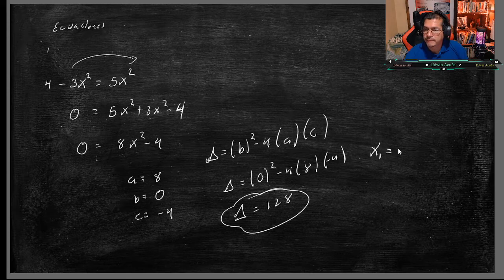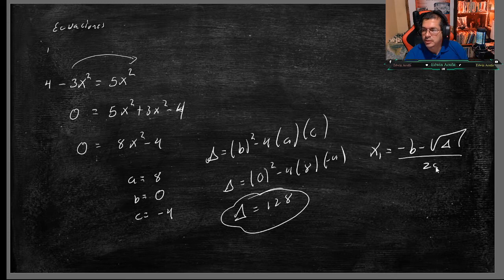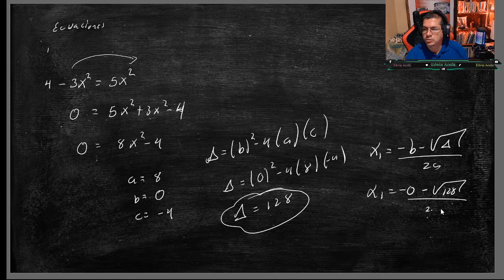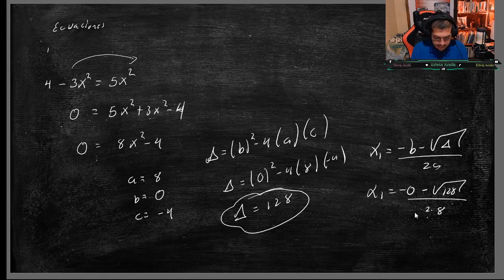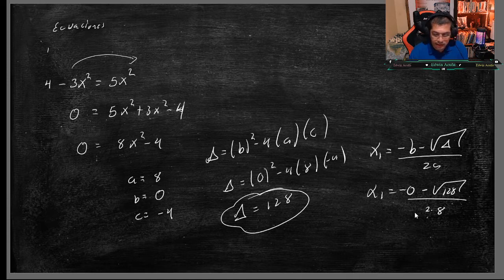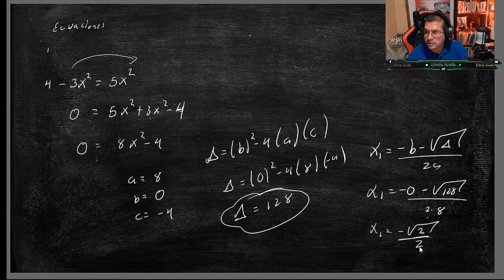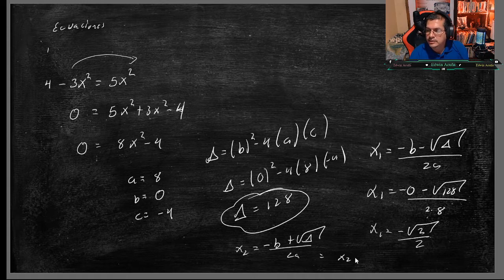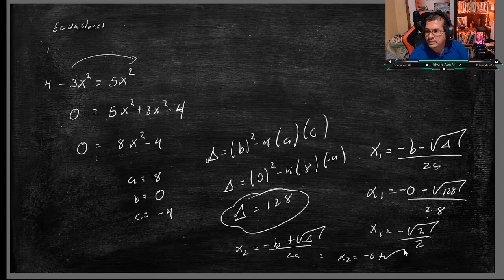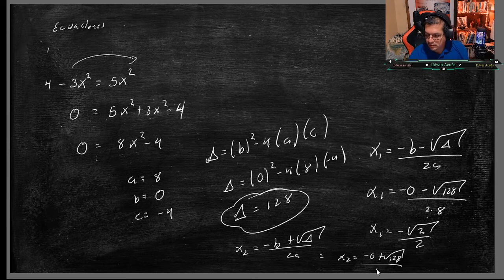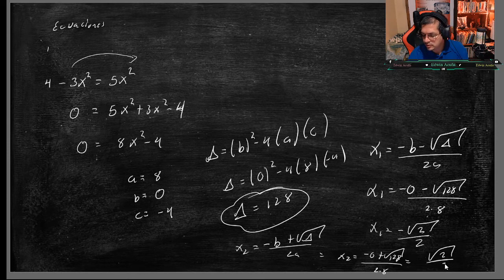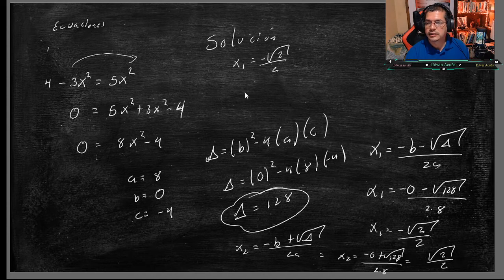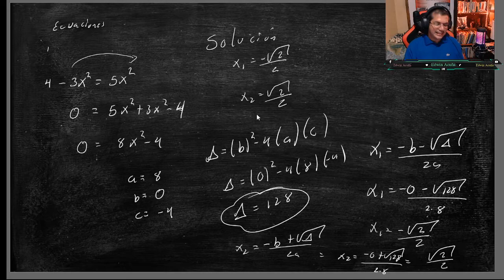X1, menos B, menos raíz discriminante, sobre 2 por A. O sea, X1 es menos 0, que es 0, menos raíz de 128, sobre 2 por 8. Me quedaría raíz de 128, sobre 2 por 8. X1 sería menos raíz de 2, sobre 2. Y X2 con más raíz discriminante, sobre 2 por A. X2 sería menos 0, más raíz de 128, sobre 2 por 8. Que en este caso es raíz de 2, sobre 2. Solución: X1 sería menos raíz de 2, sobre 2, y X2 sería raíz de 2, sobre 2. Y esas serían las dos soluciones de esa expresión.